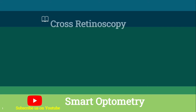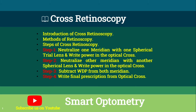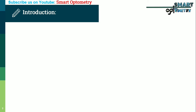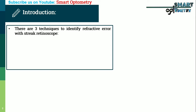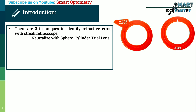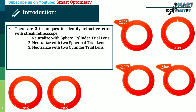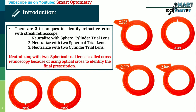Today I will discuss cross retinoscopy. There are three techniques to identify refractive error with a streak retinoscope: neutralize with sphero-cylinder trial lenses, neutralize with two spherical trial lenses, or neutralize with two cylinder trial lenses. Neutralizing with two spherical trial lenses is called cross retinoscopy because it uses an optical cross to identify the final prescription.